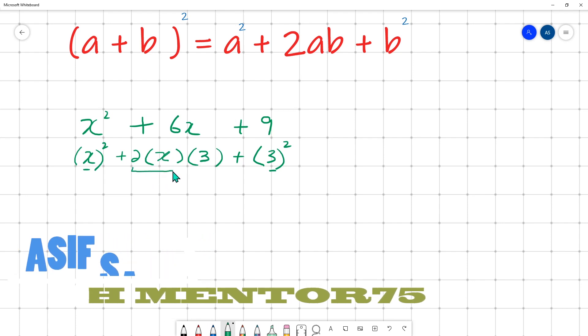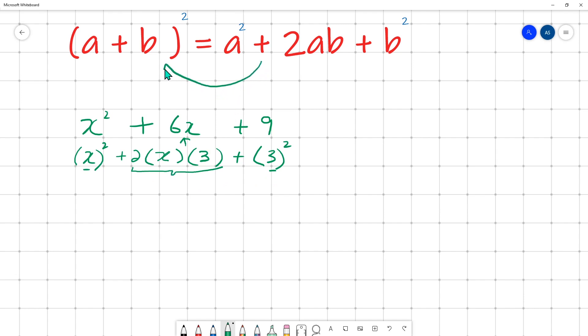Now we have to observe carefully whether the multiplication of these two is 6x, the middle thing which is given in the question. If it is so, then this means this is a square, this is b square, and this is 2ab. It means we are going to transform right hand side to left hand side. So it would become x plus 3 whole square.